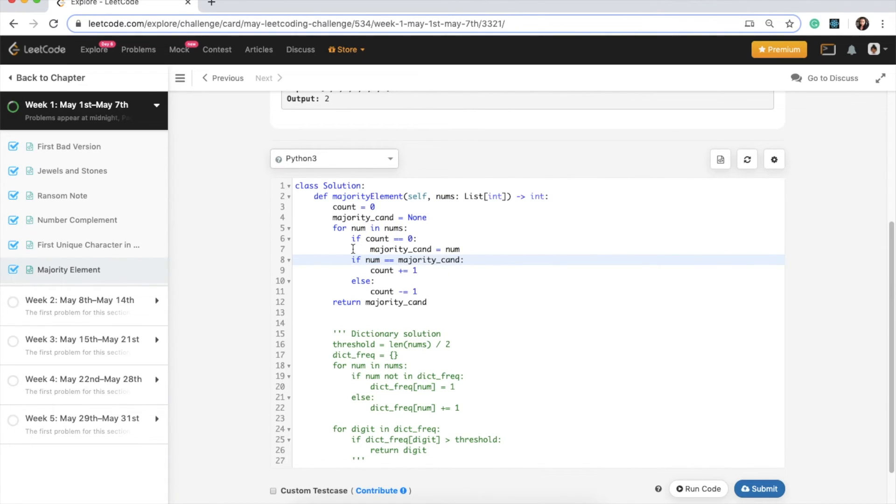And then what we're doing is we're checking if the number is equal to the majority candidate, then so what this means is if we have like three, three, so if the next item is the same as the majority candidate, then we just add a count to that majority candidate, right? So it's like they got the vote. So that's why we're increasing the count here. And if it's a different candidate, then we just minus the count. So we're decrementing the count here.